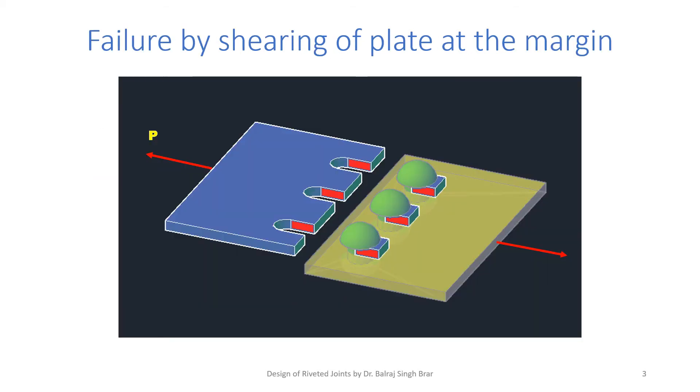Now, continuing with the failure by shearing of plate at the margin. Say, while designing accidentally, the margin of the gauge line from the edge is less.